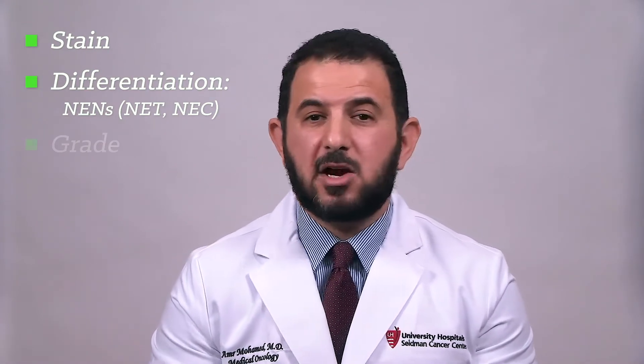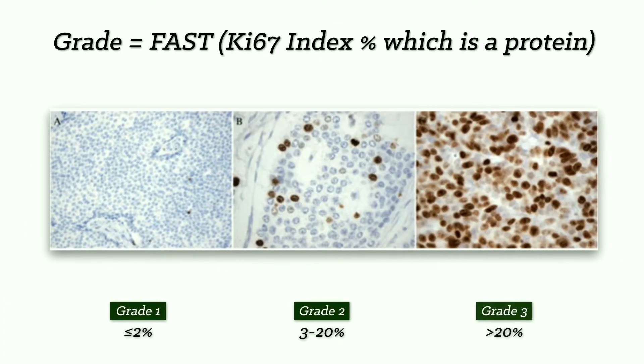The third most important piece of information is the grade, which describes how fast the cells are multiplying. We have grade 1, 2, and 3. Grade 1 is slow-growing, grade 2 is moderate-growing, and grade 3 is very fast and aggressive. Grade 1 and 2 are usually well-differentiated, but grade 3 can be either fast-growing well-differentiated or poorly-differentiated. This distinction matters because treatments, imaging choices, and outcomes differ significantly between well-differentiated grade 3 and poorly-differentiated grade 3 neuroendocrine carcinoma.